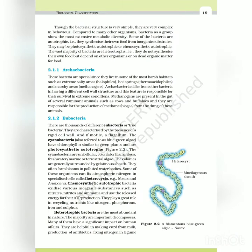Though the bacterial structure is very simple, they are very complex in behavior. Compared to many other organisms, bacteria as a group show the most extensive metabolic diversity. Some of the bacteria are autotrophic - they synthesize their own food from inorganic substrates. They may be photosynthetic autotrophic or chemosynthetic autotrophic. The vast majority of bacteria are heterotrophs - they do not synthesize their own food but depend on other organisms or on dead organic matter for food.